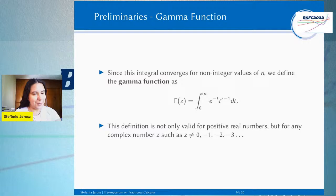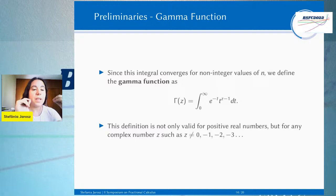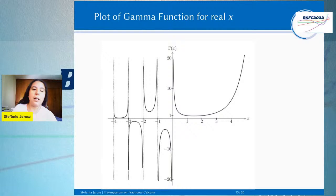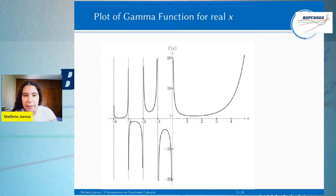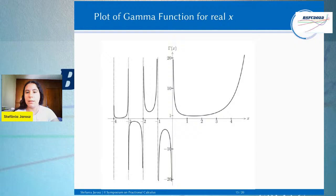Olha que coisa bonita! Por convenção, a gente diz que n fatorial é igual ao Γ(n+1). Aqui eu coloquei um gráfico da função gama para valores reais de x, onde a gente consegue observar a divergência nesses números inteiros negativos. A gente consegue também desenhar esse gráfico para complexos, e aí já vai ver mais complexidade nesses polos.